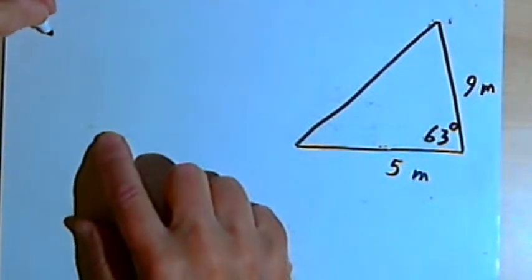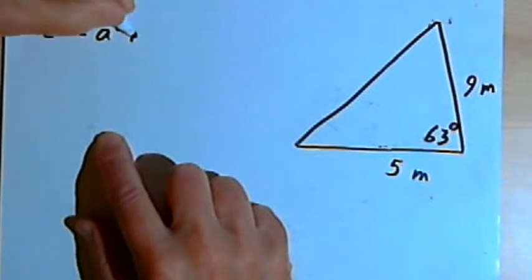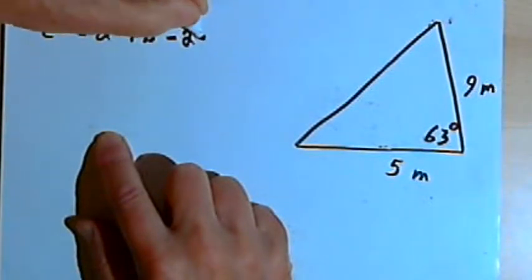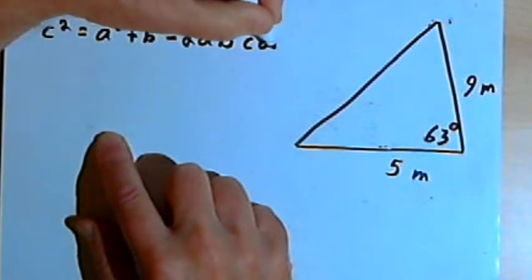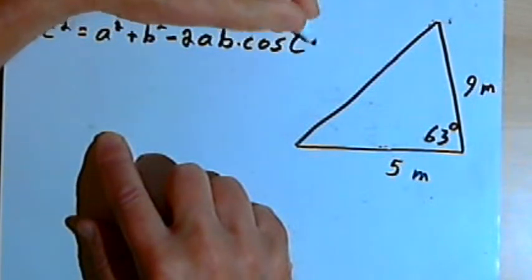So the law of cosines is c-squared equals a-squared plus b-squared minus 2 times a times b times the cosine of c.